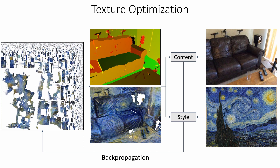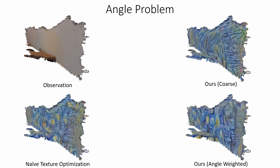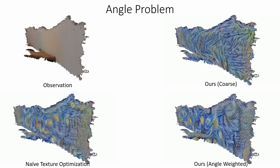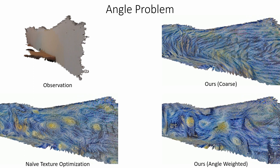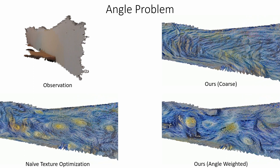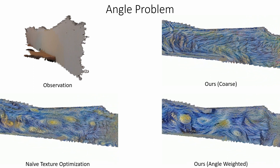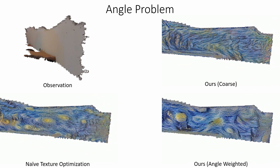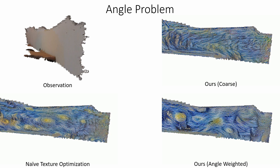There are two problems with this naive approach. When optimizing surfaces from small grazing angles, stylization patterns like stars are optimized from the perspective of that viewpoint. When viewing the scene from another perspective, these patterns appear stretched out. We avoid this effect by optimizing only coarse details for bad views and by preferring better viewing angles during optimization.